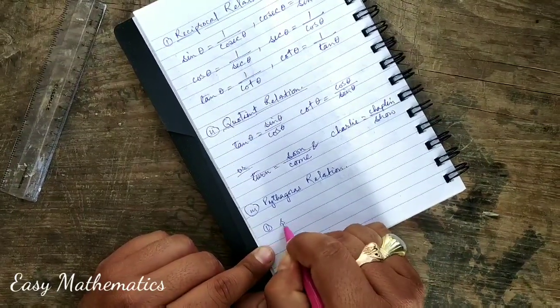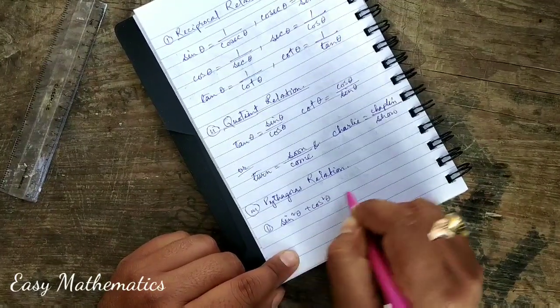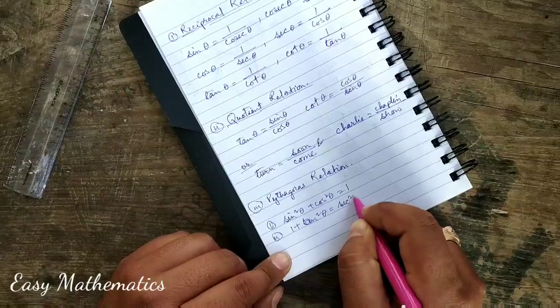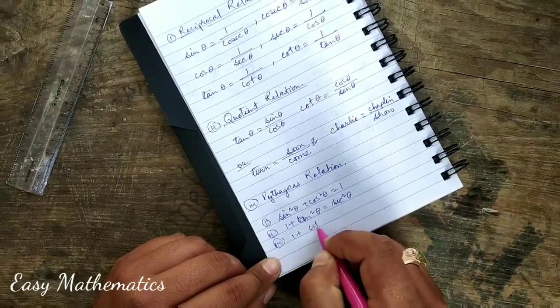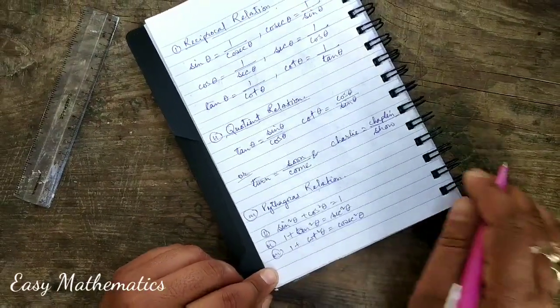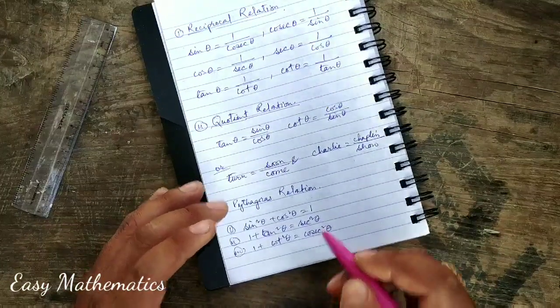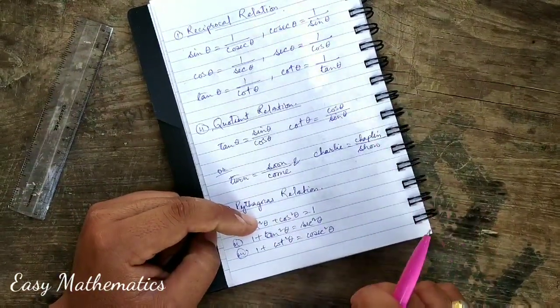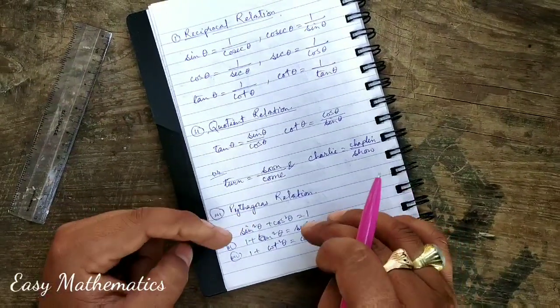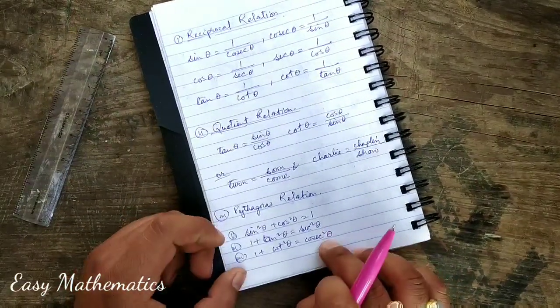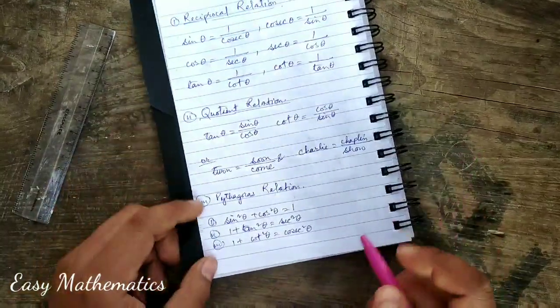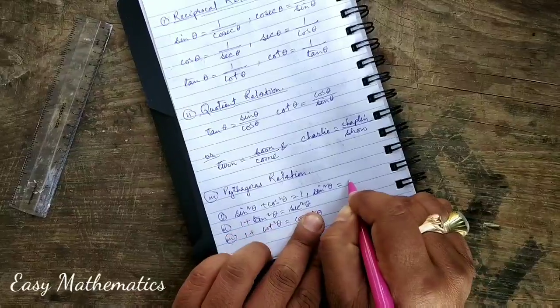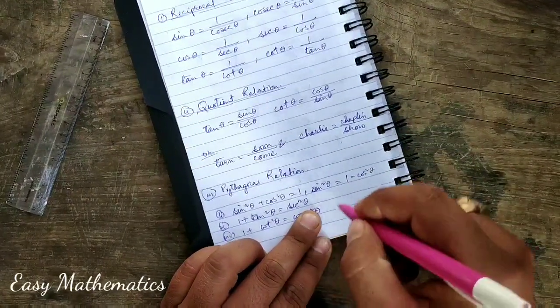Pythagoras relation, number 1: sin square theta plus cos square theta equal to 1. Number 2: 1 plus tan square theta equal to sec square theta. Number 3: 1 plus cot square theta equal to cosec square theta. This is the graph. You remove 1 square.